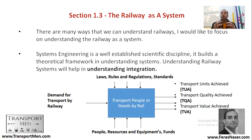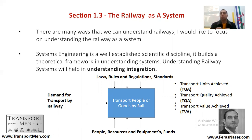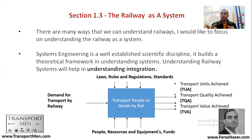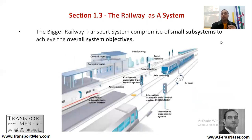People, resources, equipment, and funds also enter to create the system. With these components entering together, there will be an output. These are theoretical units — not standard units in common use — but they help you understand the output of the railway as a system: transport units achieved, transport quality achieved, and transport value achieved.